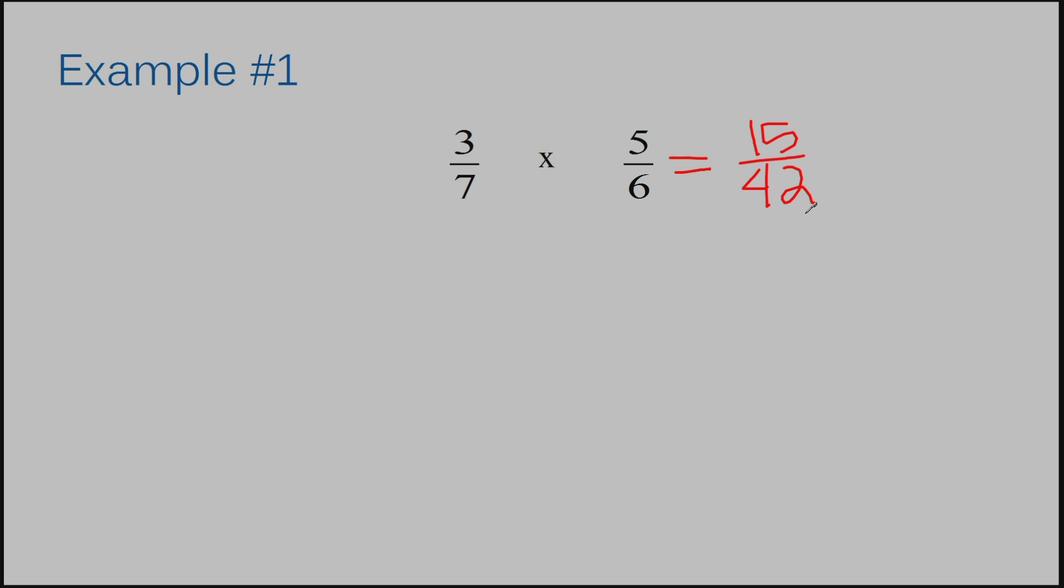Then you simplify your fraction if you're able to. I can divide 3 into 15 and 42. So 15 divided by 3 is 5, and 42 divided by 3 is 14.